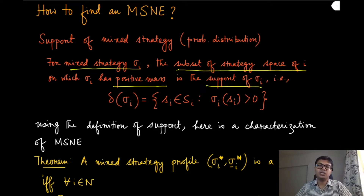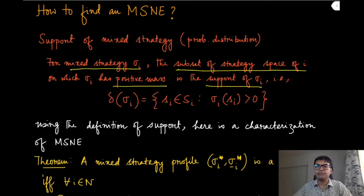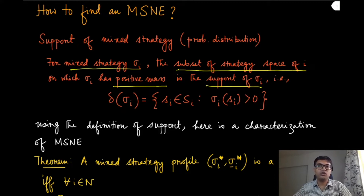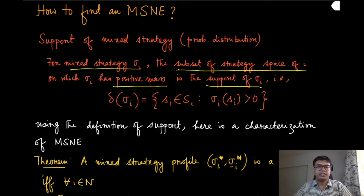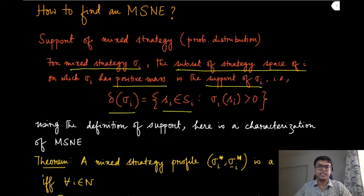In the penalty shootout example with strategies left and right: if the probability mass is positive on both, then the support is both L and R; if it is zero on one of them, then only the other remains in the support. Formally, delta(sigma_i) denotes the support of sigma_i, which is the collection of all strategies in the strategy set where sigma_i has a positive probability mass on that strategy s_i.